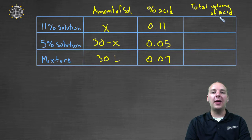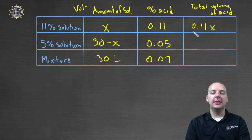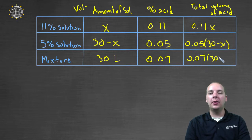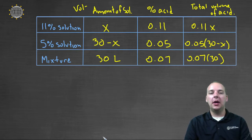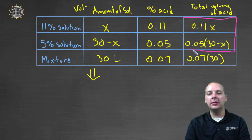How much total volume of acid is there? If the solutions are eleven percent and five percent acid, we take that percentage of the total volume. So we'll have 0.11x — that's how much acid is in the eleven percent solution. Then we'll have 0.05 times (30 minus x) for the acid from the five percent solution. And we also need 0.07 times 30 for the acid in the mixture. The acid from both individual solutions combined equals the total acid in the mixture.